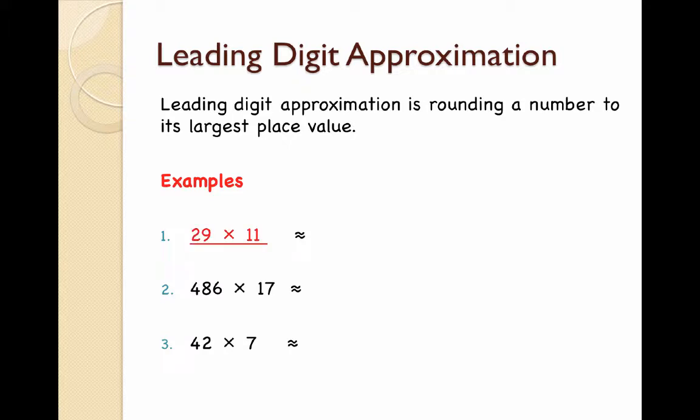Let's have a look at 29 times 11. This question would normally take a long time to do, but we're going to round these numbers first and then get an estimation. I'm going to take 29 and round it to the nearest 10, that gives me 30. I'm going to do the same thing to 11, round it to the nearest 10, and that's going to give me 10.